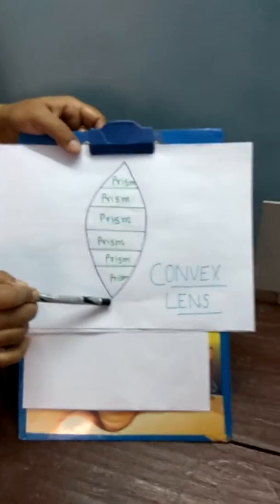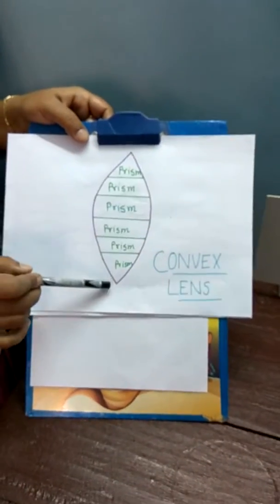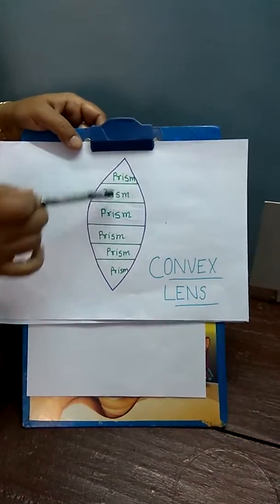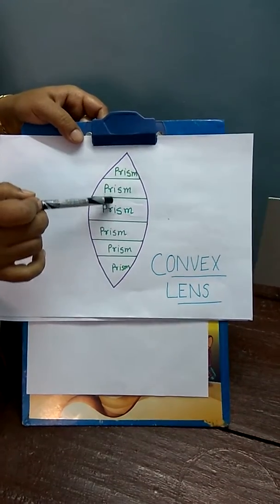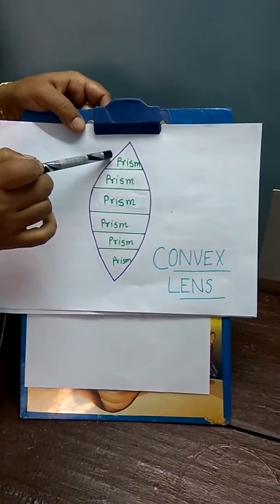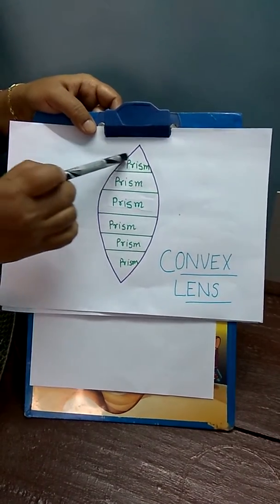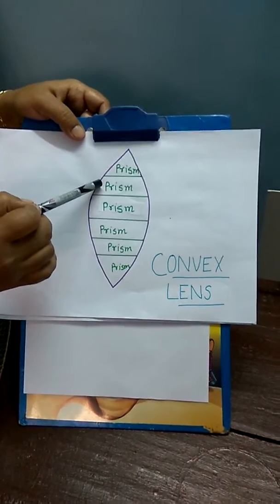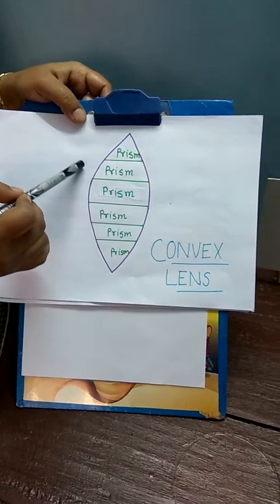When you draw the diagram of a convex lens on paper it will be like this. We can see that it is a stack of prism and as per the property of a prism, when a ray of light enters a prism it bends towards its base.